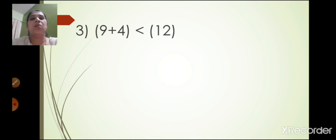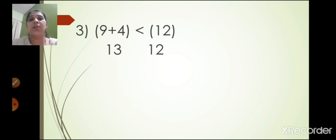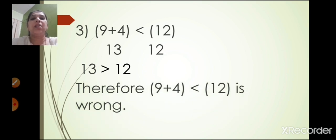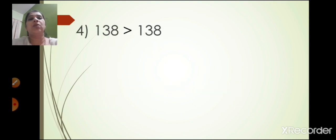The third one: 9 plus 4 is smaller than 12. Now 9 plus 4 is 13. Is 13 smaller than 12? No — 13 is greater than 12. So therefore 9 plus 4 is smaller than 12 is wrong.